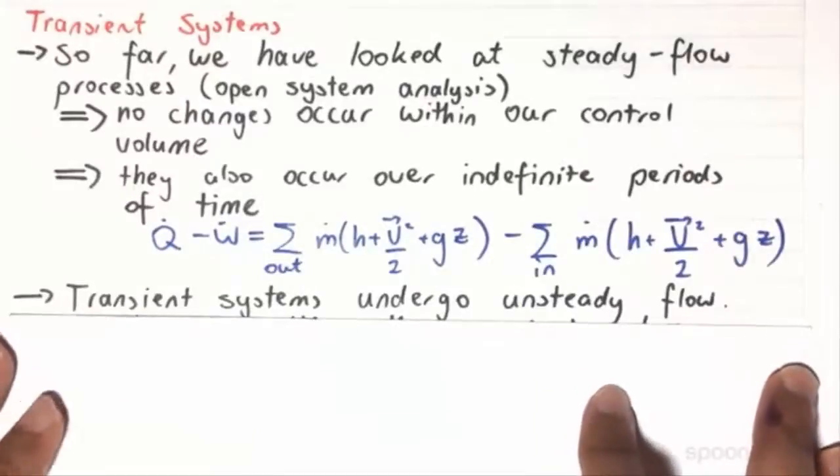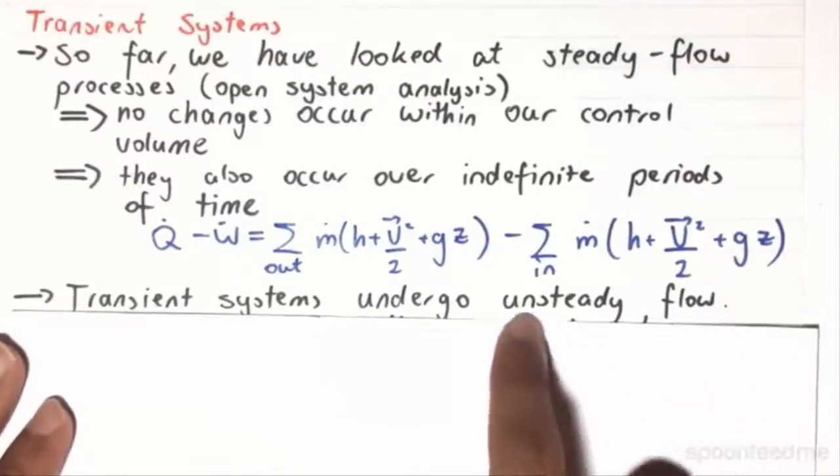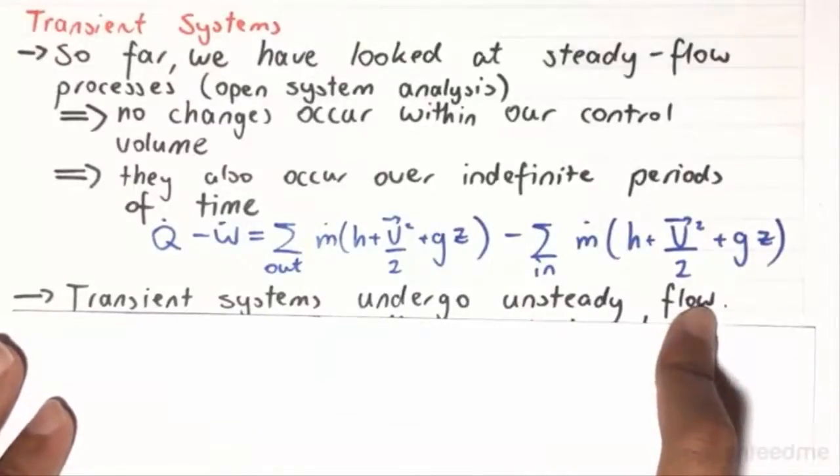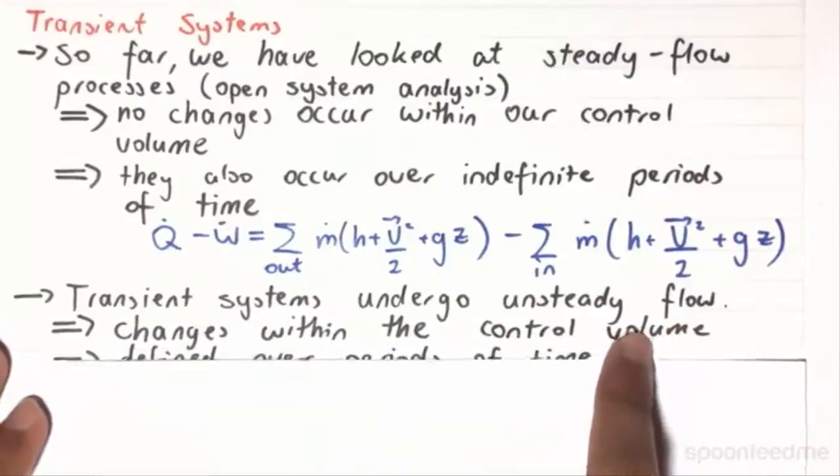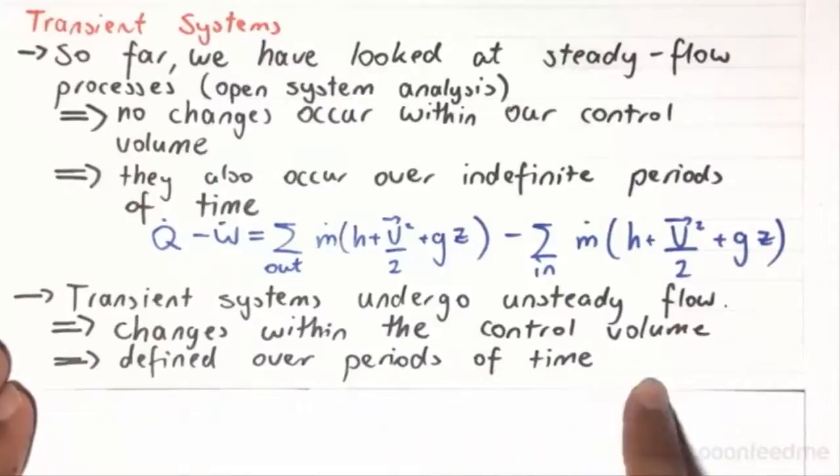What we have then are transient systems, which are actually unsteady flow processes. So there are changes within the control volume, and furthermore, they are also defined over periods of time.